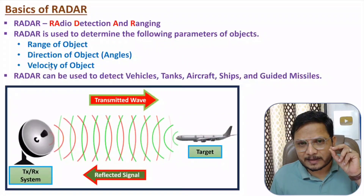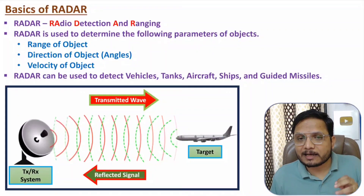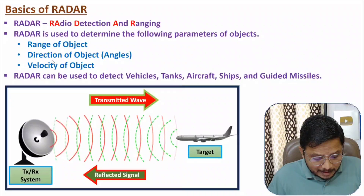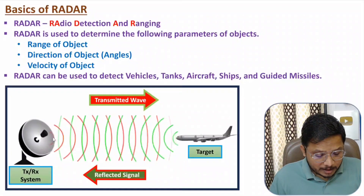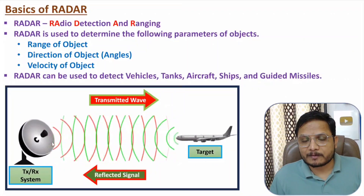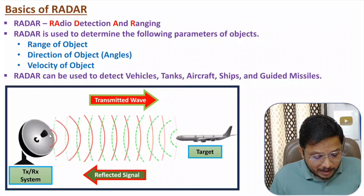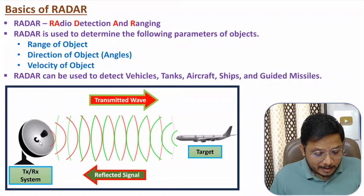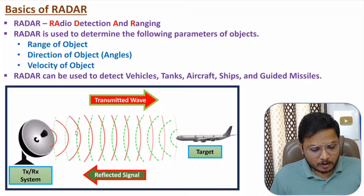Whenever radar transmits a signal, that signal travels with the velocity of light, which is 3 × 10⁸ m/s. The signal propagates from the system to the object, gets reflected back to the system, so the signal travels a total distance of 2x. Based on velocity and time, one can identify the distance of the object. The direction of the object is identified based on the direction of the antenna, and the velocity of the object is calculated based on the frequency drift between the transmitted signal and the received signal.